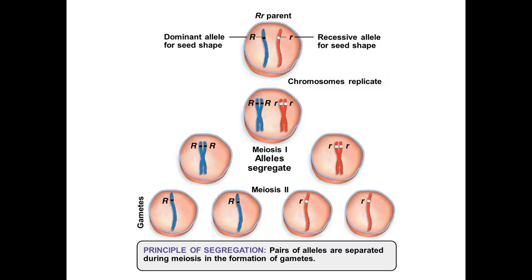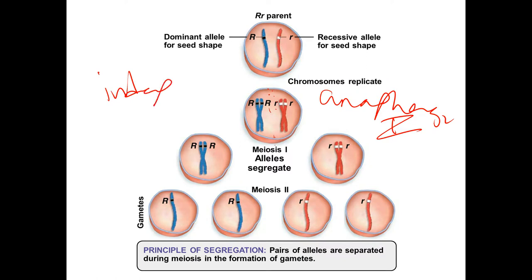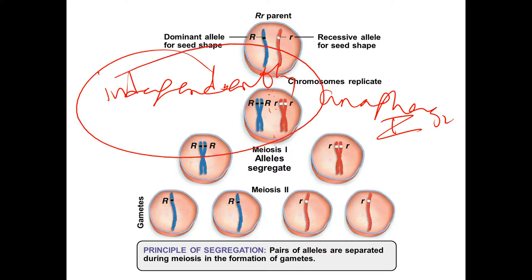Looking at the principle of segregation: this has to do with metaphase I of meiosis. The chromosomes line up at the metaphase plate and they segregate independently from one another. We're looking at one chromosome pair — these chromosome pairs segregate independently, so one goes into one daughter cell and the other goes into the other.